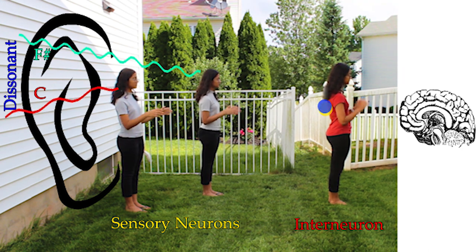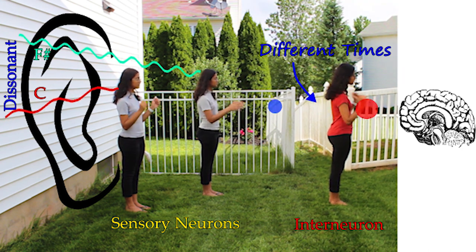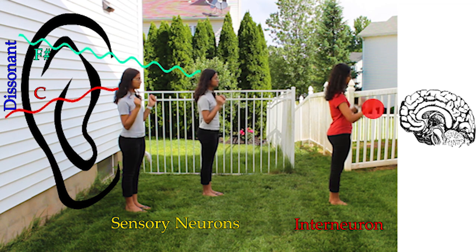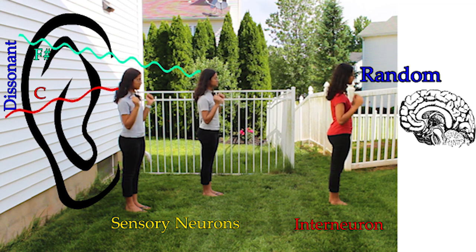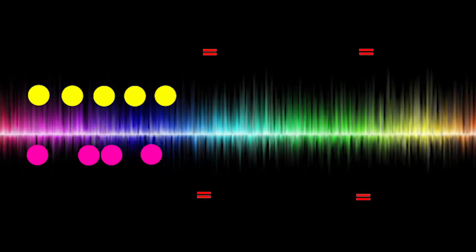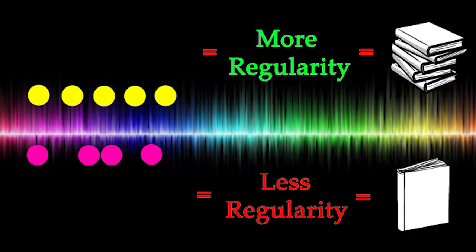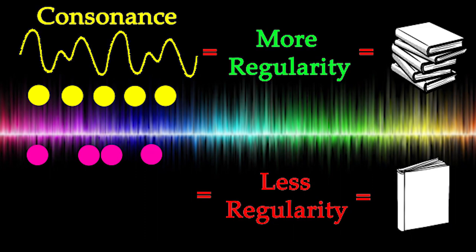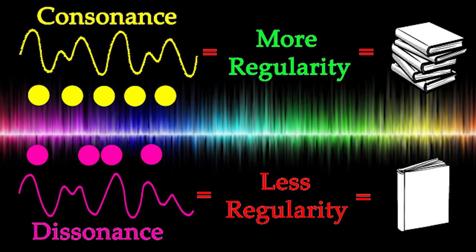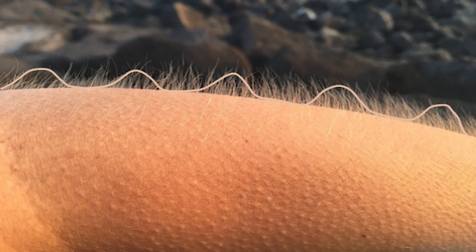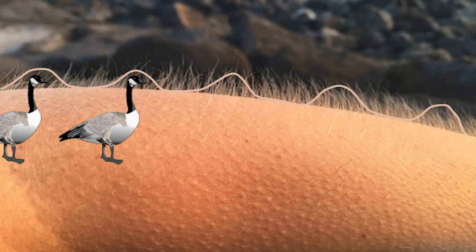The signals from dissonant waves arrive at different times, and so the interneuron generates a random string of pulses. The less random a signal is, the more information or regularity it contains. Therefore, consonant chords produce higher regularity with more information than dissonant chords.